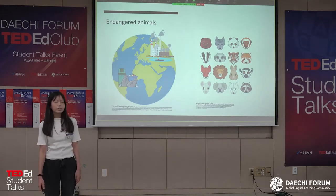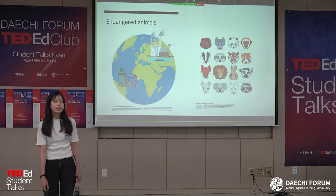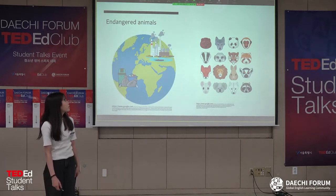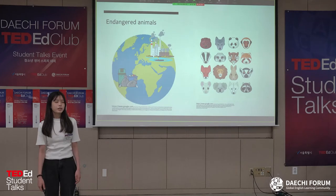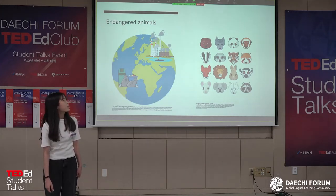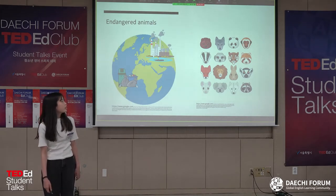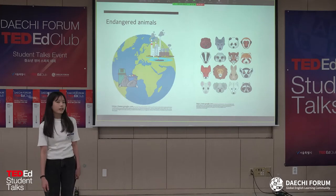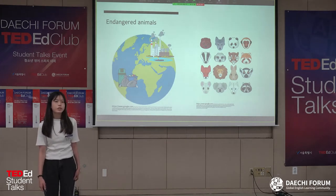Currently in Korea there are 281 species classified as endangered wildlife and many more in the whole world. Representative animals are tigers, bears, and dolphins. There are animals which are already destroyed, like the dodo, which is a bird that cannot fly, and the aurochs, which is a cow that has a horn on its head. There are many endangered animals and animals which have been destroyed.